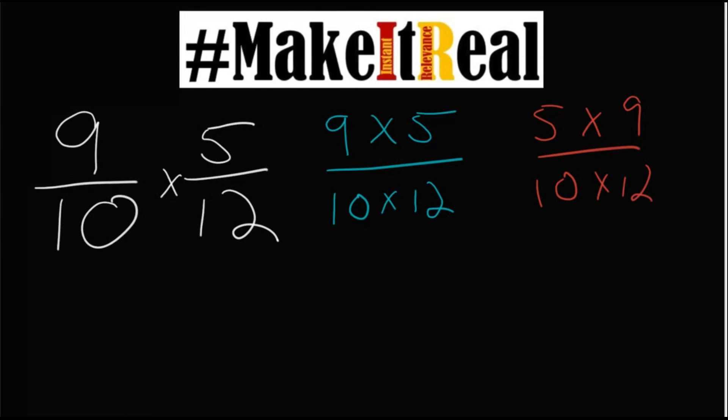5 times 9 over 10 times 12. And then using their understanding of the vertical fractions they see 5 tenths is 1 half times 9 twelfths which is 3 fourths. And they can multiply straight across the numerator and the denominator to get 3 eighths as an answer here. Not only does it make sense but they can also clearly explain their procedural thinking along the way.